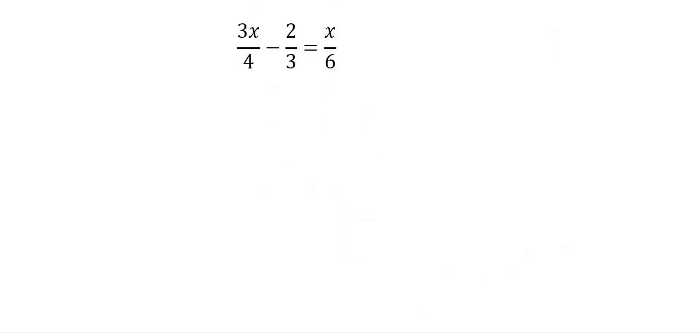Here's another example. So our first step is to get rid of the common denominator. Now the common denominator here is also 12. So I'm going to say here, lowest common denominator is 12. So I could multiply this by three, this one by four, and this one by two.